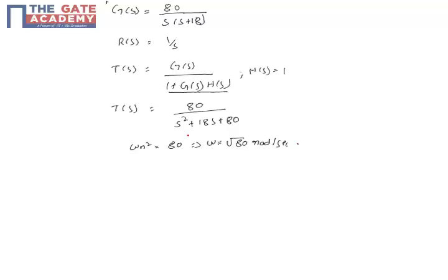Like a second order system will have its parameters corresponding to this particular format. So omega n squared is 80 in this case, from which we have omega n to be root of 80.